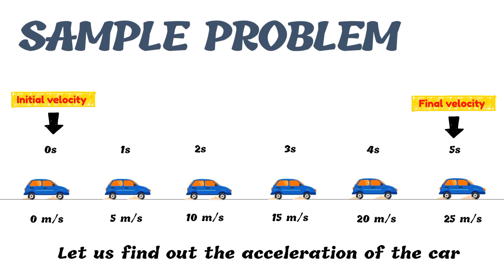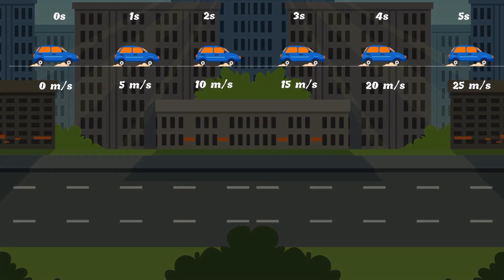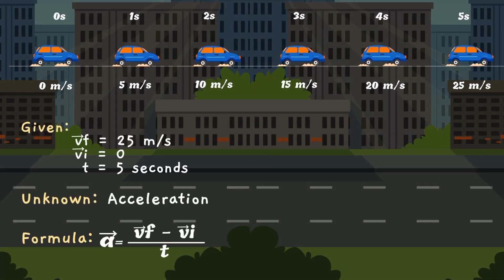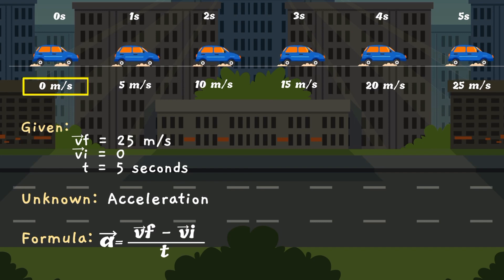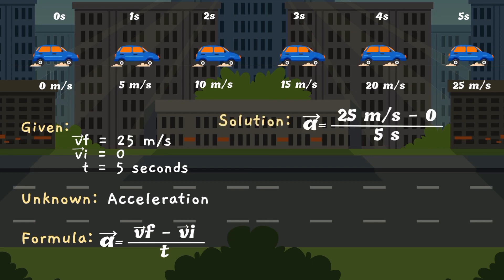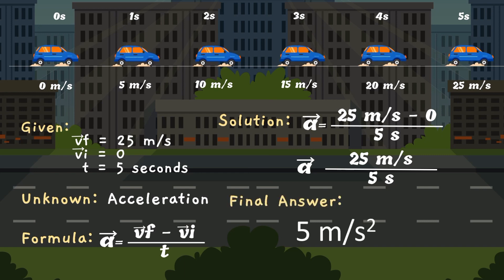Now let us find out the acceleration of the car. The formula for acceleration is final velocity minus initial velocity divided by time. The final velocity is 25 meters per second, the initial velocity is 0 meters per second, and the time is 5 seconds. To calculate: 25 m/s minus 0 equals 25 m/s, divided by 5 seconds. The answer is 5 meters per second squared. Therefore, in this case, the car is accelerating at an average of 5 meters per second squared.